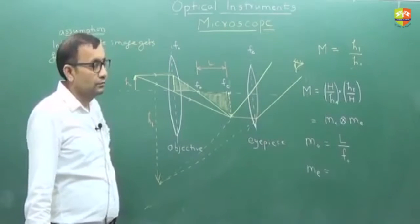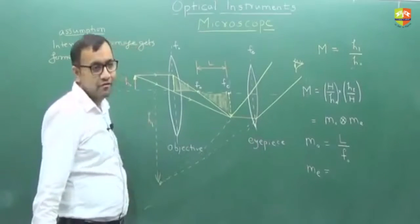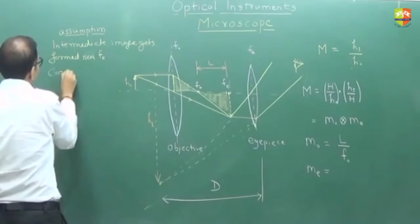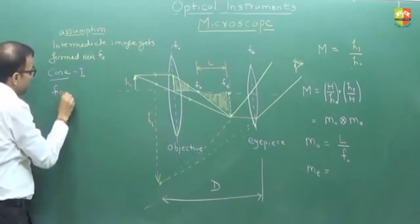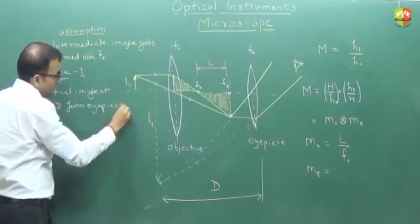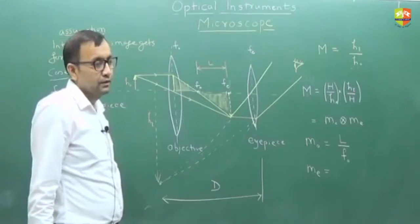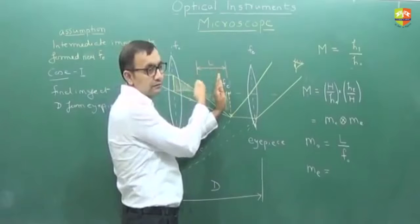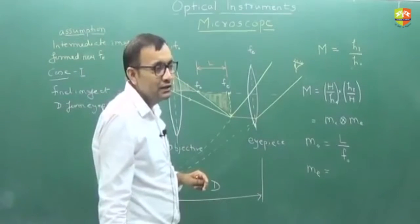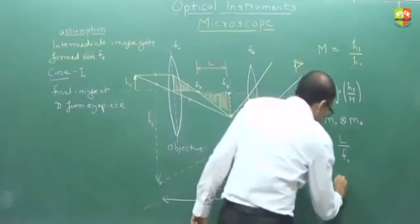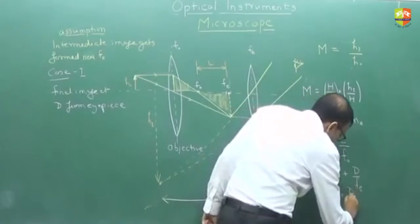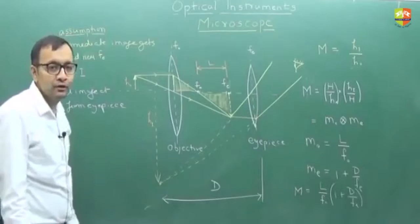Now tell me what is ME. The image gets formed at distance D from the eyepiece — that is case number one. Forget the objective; the eyepiece behaves like a simple microscope with image at D. So ME equals one plus D by FE. Therefore total magnification is L by FO multiplied by one plus D by FE. This is the compound microscope magnification.